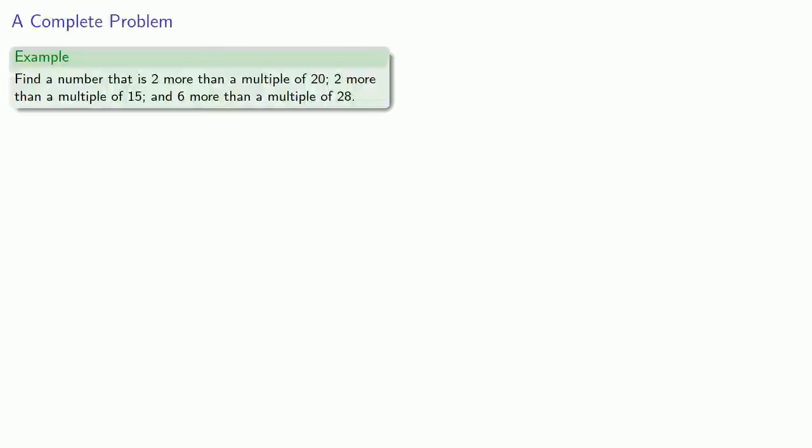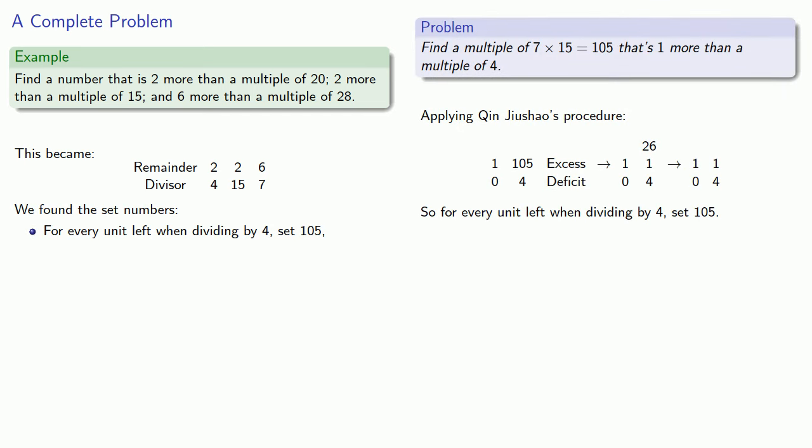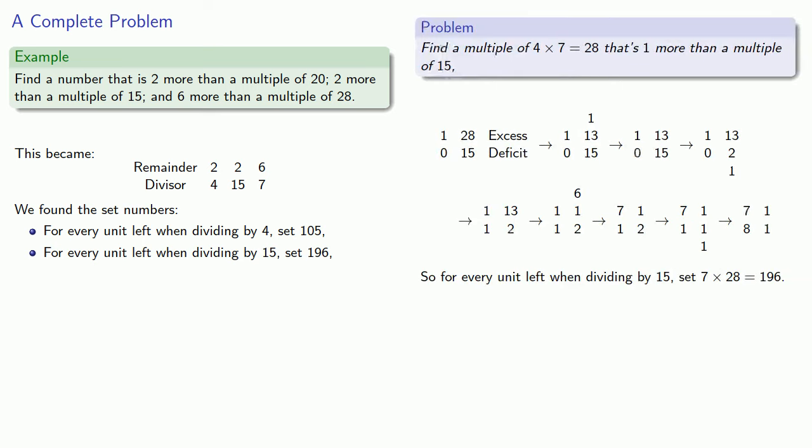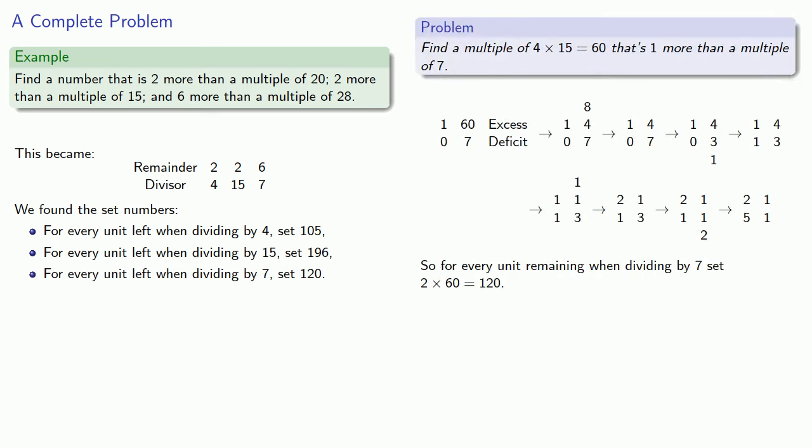To recap our original problem, we reduced our divisors. Then we found the set numbers: for every unit left when dividing by 4, set 105; for every unit left when dividing by 15, set 196; and for every unit left when dividing by 7, set 120.